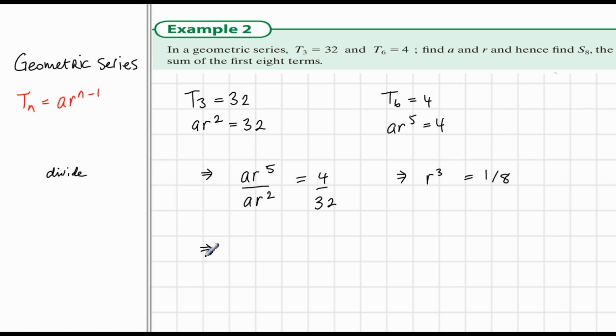So then r would be equal to the cubed root of 1 over 8. Now, the cubed root of 1 eighth is 1 half. So we have the answer to r.